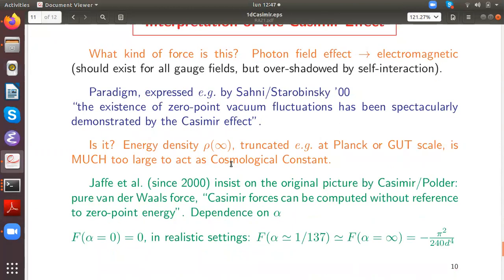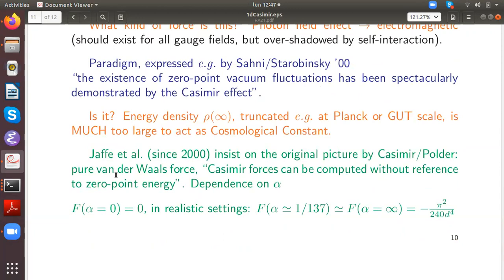In principle, this density seems to diverge, but we can truncate it, for instance at the Planck scale. But if we compare it to the cosmological constant, which is the vacuum density that we have in the universe... A review was done by Bob Jaffe et al. at MIT since 2000. They work on this problem and they insist on the original picture by Casimir and Polder that this is a pure van der Waals force, the right Casimir effect. Casimir forces can be computed without reference to zero-point energy.